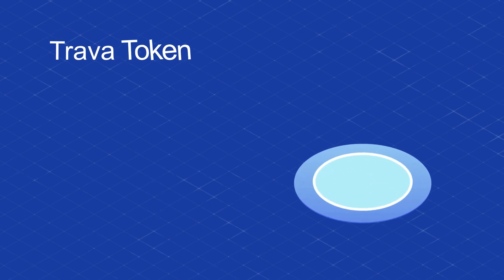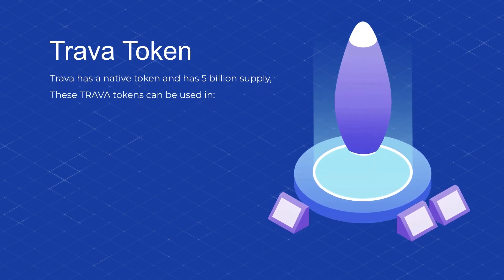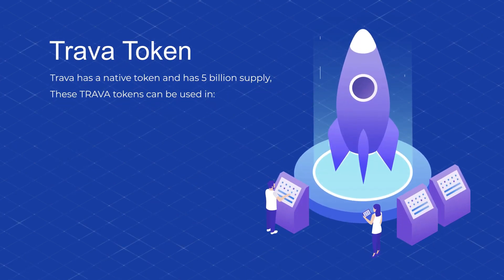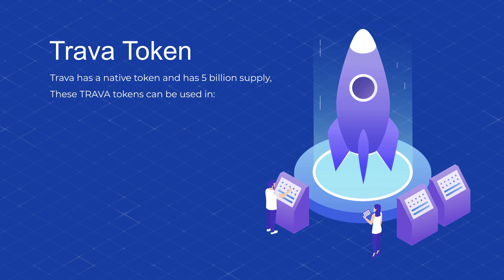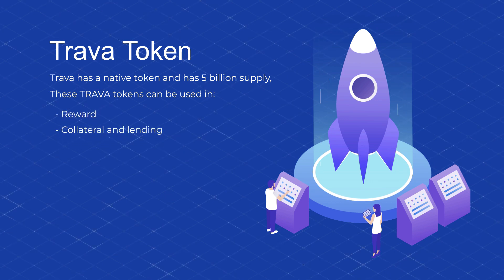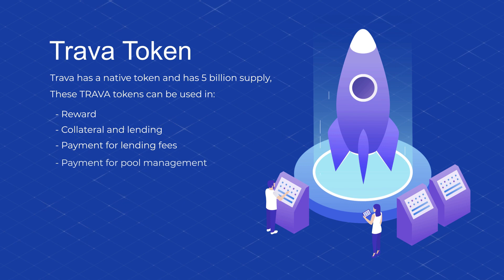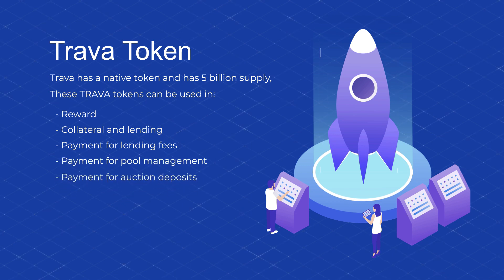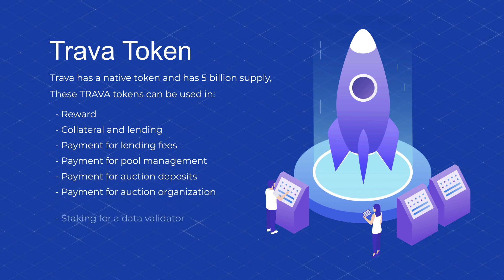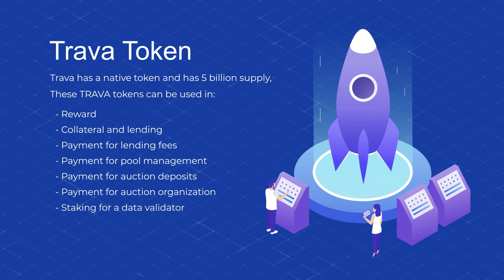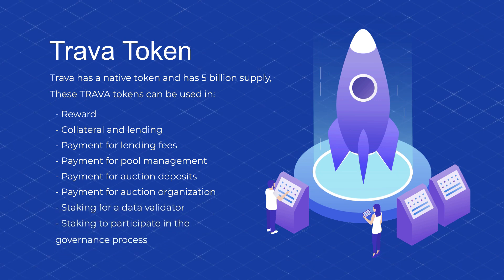Trava token: Trava has a native token with a 5 billion supply. These Trava tokens can be used for reward, collateral and lending, payment for lending fees, payment for pool management, payment for auction deposits, payment for auction organization, staking for a data validator, and staking to participate in the governance process.